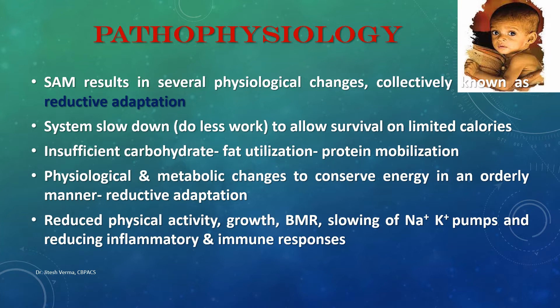The physiological changes in severe acute malnutrition are collectively known as reductive adaptation. The body reduces various metabolic activities to allow survival on limited calories. When carbohydrates are insufficient, fat is utilized for energy production. When fat is almost depleted, protein from muscle is mobilized for energy. Various physiological and metabolic changes occur to conserve energy in an orderly manner — this is reductive adaptation.